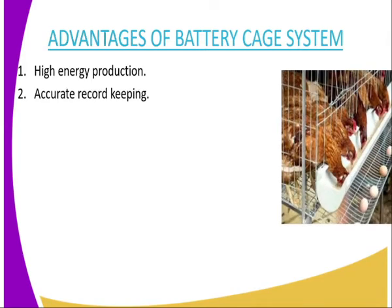There is high egg production because the birds are not roaming within the compound, but they are confined within their cages. And number two, accurate record keeping, because each cage is assigned to a particular bird, and therefore you will know which bird has laid and which bird has not laid.